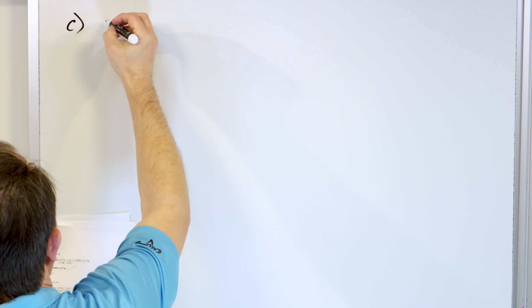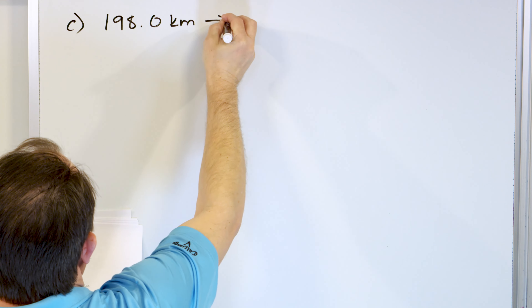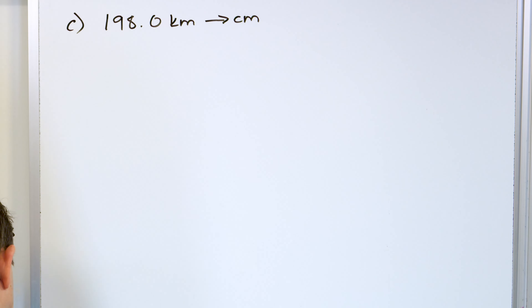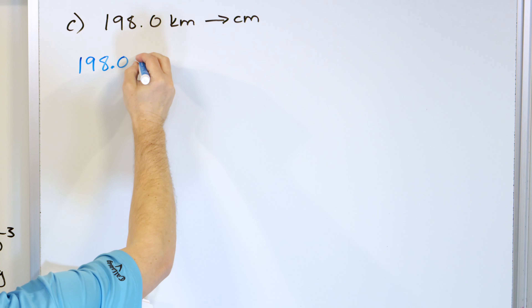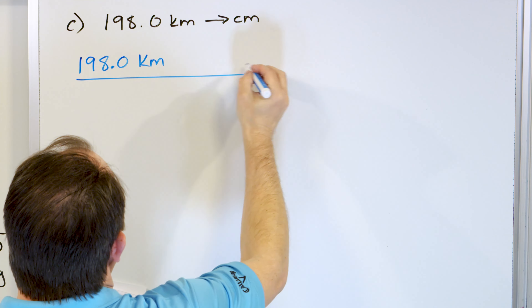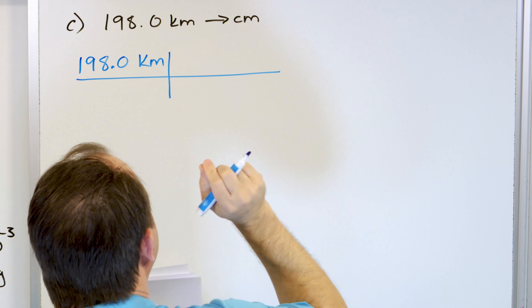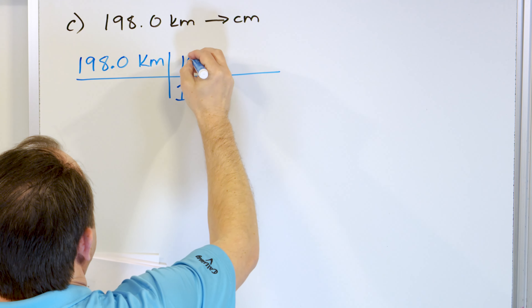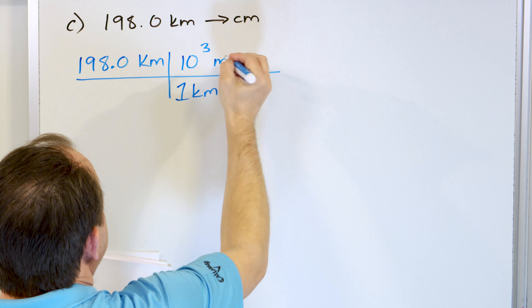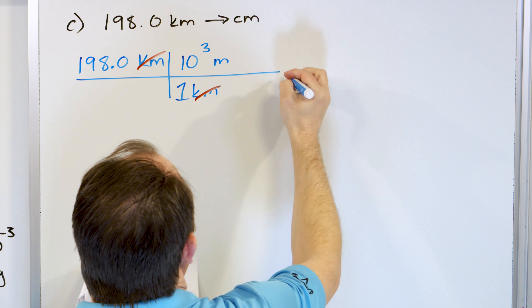Let's take a look at part C. Let's convert 198.0 kilometers and convert that to centimeters. So we write down what we have been given: 198.0, and that's kilometers. Now I don't know how to go directly from kilometers to centimeters, but I know how to go from kilometers into meters and then from meters into centimeters. I know that in one kilometer there are 10 to the three meters, or 1,000 meters — that's what a kilometer is. So I arrange it this way so the kilometers cancel. If I stop here I'll be left with meters, but I'm going to go further.